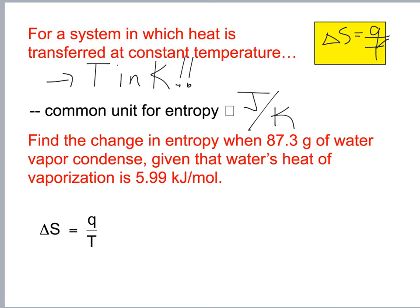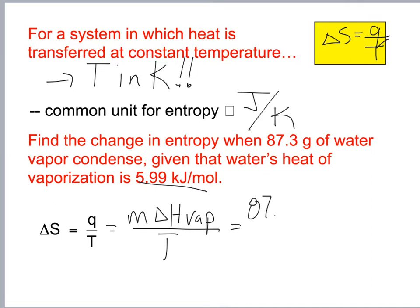Find the change in entropy of 87.3 grams of water vapor condensed, given that the water's heat of vaporization is 5.99 kJ/mol. We can use mass times delta H of vaporization divided by temperature.